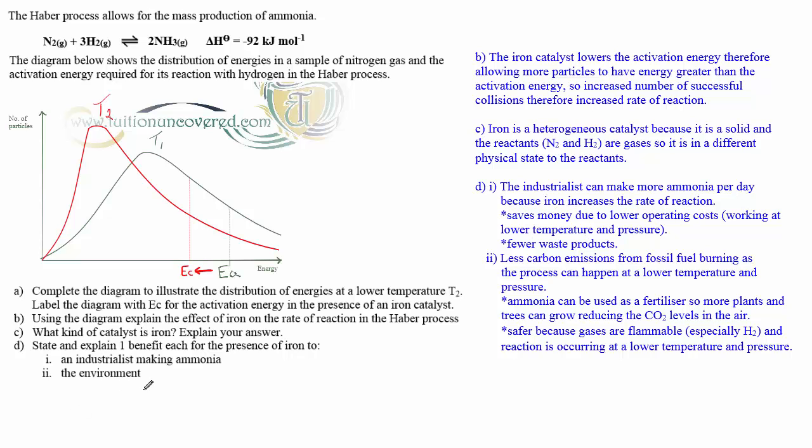To the environment, less carbon emissions from fossil fuel burning as the process can happen at a lower temperature and pressure. Other answers could have been ammonia can be used as a fertilizer, so more plants and trees can grow, reducing the CO2 levels in the air. Also, the presence of a catalyst is safer because gases are flammable, especially hydrogen, and the reaction is occurring at lower temperatures and pressures, therefore making the industrial environment more safer because of these flammable gases at higher temperatures would have been more dangerous. At lower temperatures and pressures, that safety is that bit more better for these flammable gases being used.